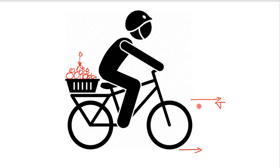Suppose constant speed, constant velocity. The apple is going along with the cycle, along with that bike.